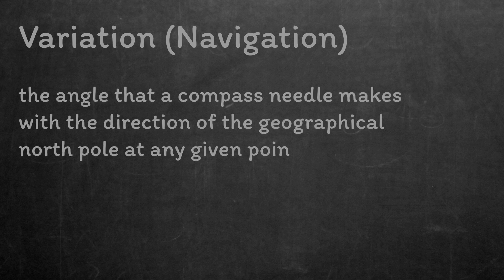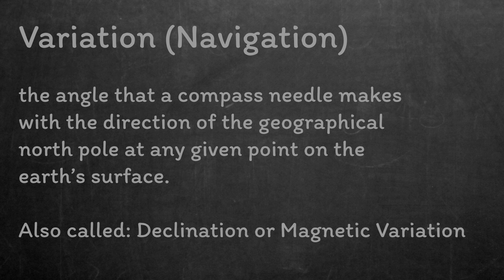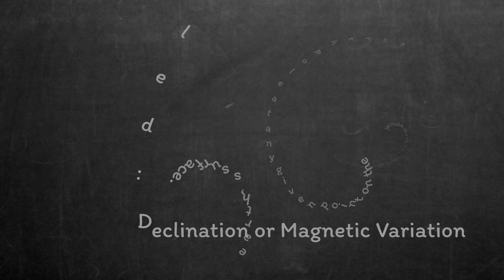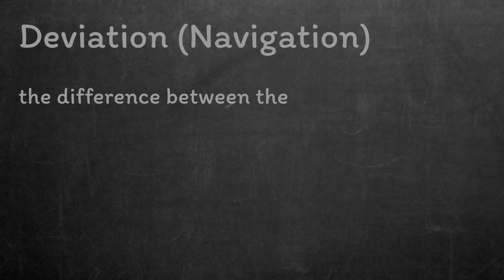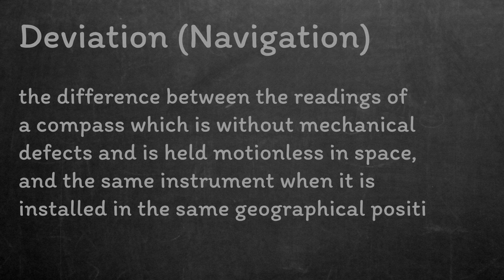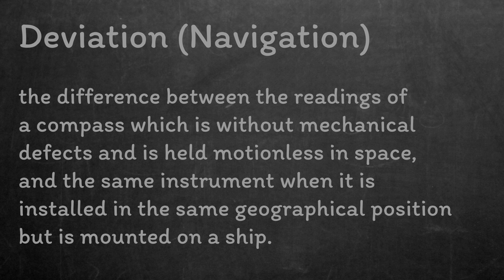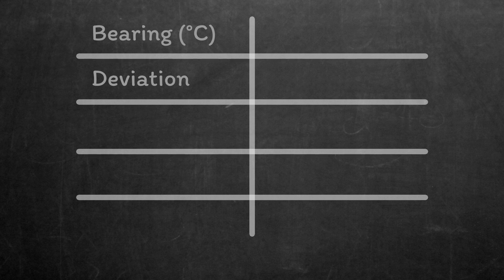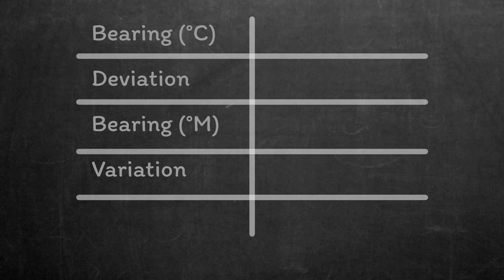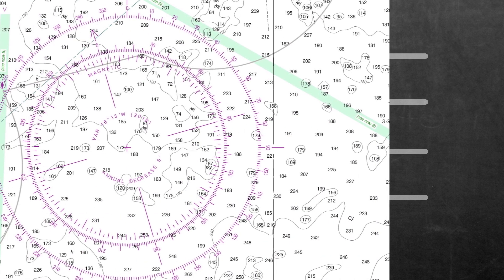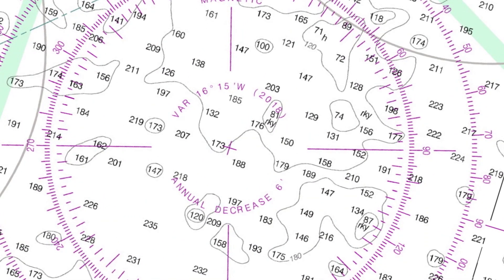Correcting a bearing just means taking variation and deviation into account. Variation is the difference between magnetic north and true north, and it's to do with the magnetic north pole wandering around a little bit. Deviation is the difference between magnetic north and what your compass says is north, and is more to do with the metals on your boat deflecting the compass. To correct a compass bearing, you just apply the corrections in order. You can find the variation on the compass roses on the chart — in our case it's going to be 16 degrees 15 minutes west, as we're still in 2018.